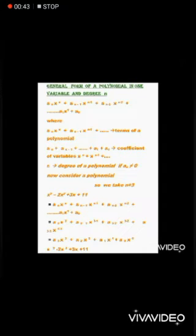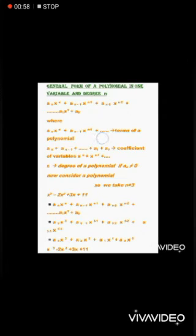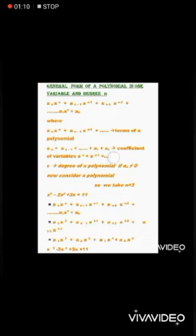In this general form, aₙxⁿ, aₙ₋₁xⁿ⁻¹, and so on through a₀ are called the terms of the polynomial. The values aₙ, aₙ₋₁, aₙ₋₂, … a₀ are the coefficients of the variables xⁿ, xⁿ⁻¹, xⁿ⁻², and so on. And n is called the degree of the polynomial, provided that aₙ is not equal to 0.